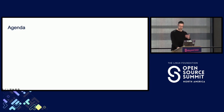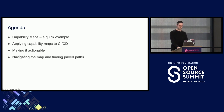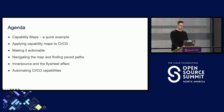That experience has inspired a lot of this talk — trying to get these practices and capabilities out into the larger organization. For our agenda, we've got a lot to fit in today, but we are going to talk about capability maps: what they are, how we can apply them to CI/CD, how we can make that actionable, the different ways to navigate the map, and how we can use that to find and create paved paths. We'll also talk about inner source and how we can potentially automate some of the things we're going to see.